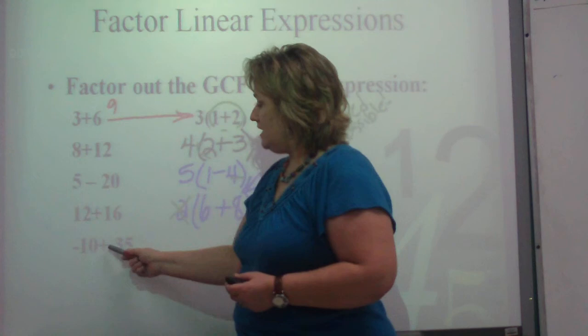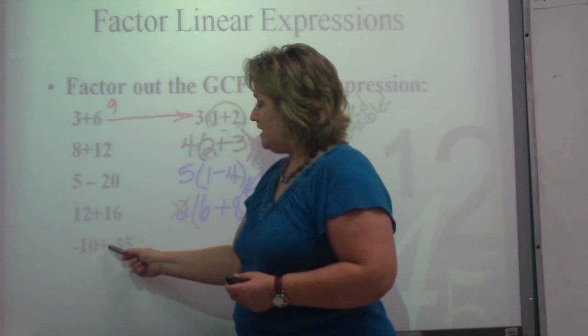Negative 10 plus 35. I know that 5 can be factored out of both of them. 5 will go into negative 10. Negative 2 times. Negative 2 times 5 is negative 10. And then it'll go into that 7 times.